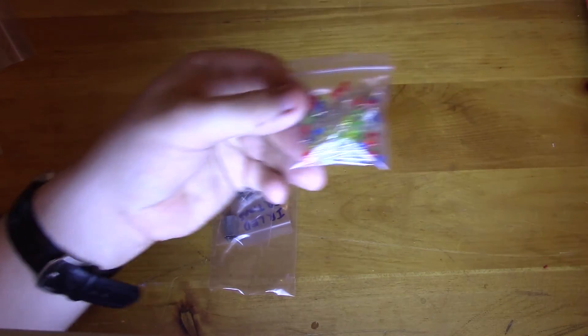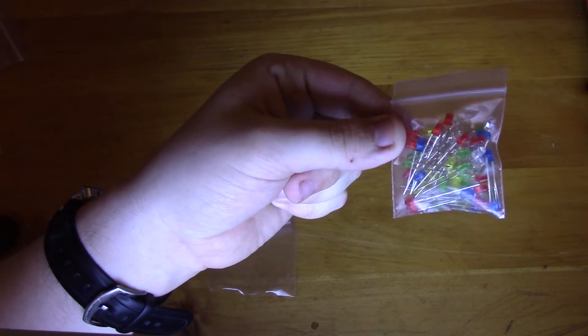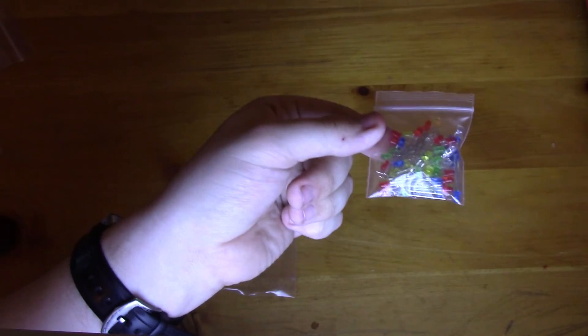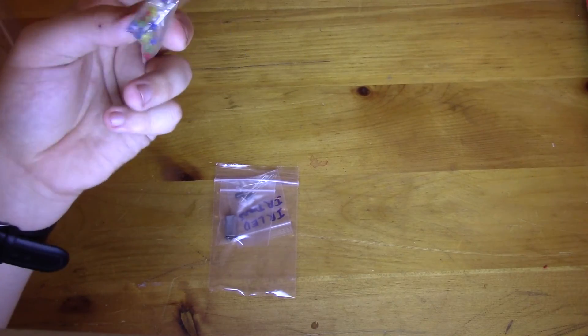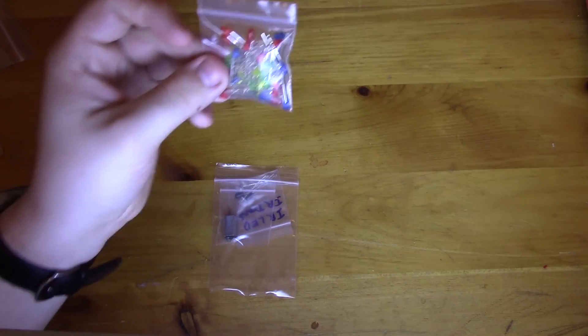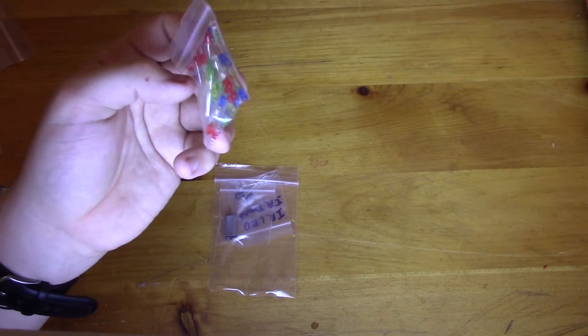Earlier this year, I went and I bought probably a good 3,000 or 4,000 LEDs on eBay. Just all assorted colors. I love to keep these around. So you got a nice, good, thick bag supply of them here. Probably about 20 or 30. Maybe 20.